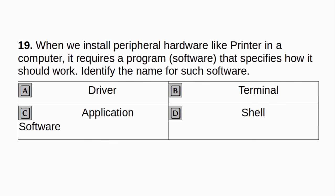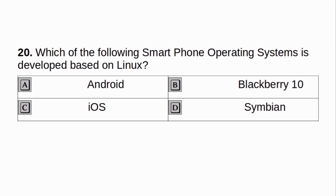When we install peripheral hardware like a printer in a computer, it requires a program software that specifies how it should work. Identify the name of such software. a. Driver. b. Terminal. c. Application software. d. Shell. Answer: a. Driver. Which of the following smartphone operating system is developed based on Linux? a. Android. b. Blackberry 10. c. iOS. d. Symbian. Answer: a. Android.